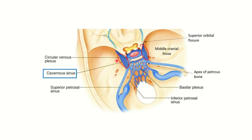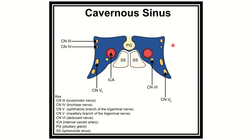We can see different venous structures draining into the cavernous sinus. In this cross-section picture of the cavernous sinus, we can see the internal carotid artery passing through the cavernous sinus. Just below and laterally, there is cranial nerve six, the abducent nerve. So the abducent nerve and internal carotid artery both pass through the middle part of the cavernous sinus.